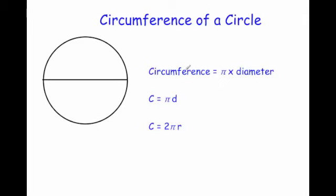The formula is circumference equals pi times diameter, or written algebraically, c equals pi d. It can also be written as c equals 2 pi r, which means if you're given the radius you double it and then multiply by pi to get the circumference. All three of these formulas may be used by your maths teacher.